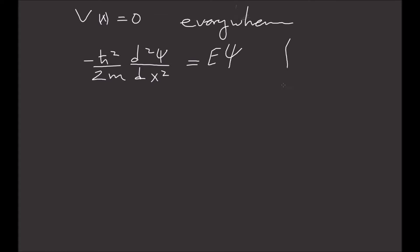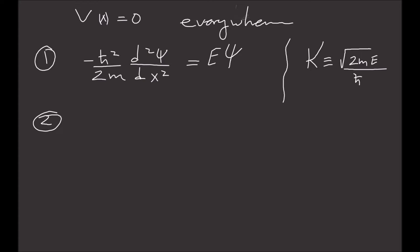Before we carry on, let's define a new variable k, and let's define k as the square root of 2mE divided by h-bar. With this in mind, let's call this equation number one. Equation number one becomes equation number two, which is the second derivative of psi with respect to x equals minus k squared times psi.